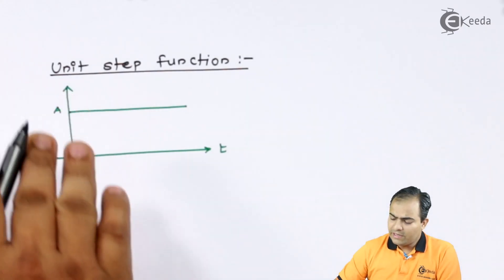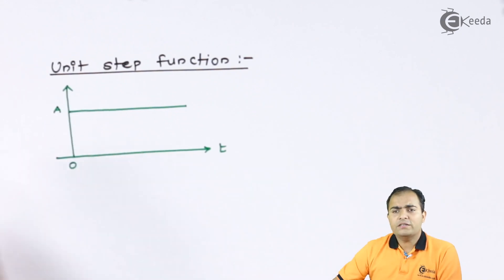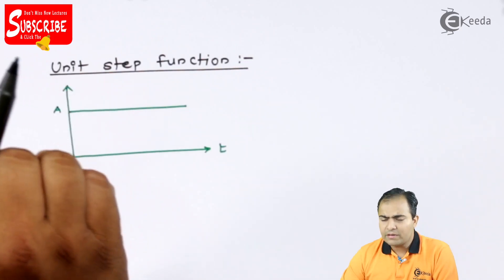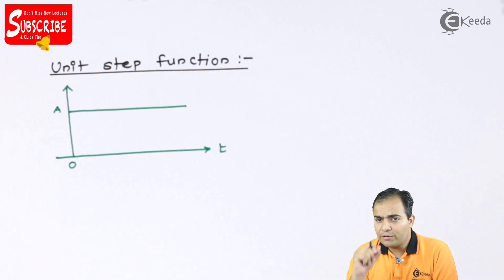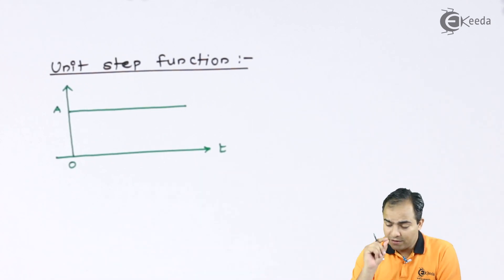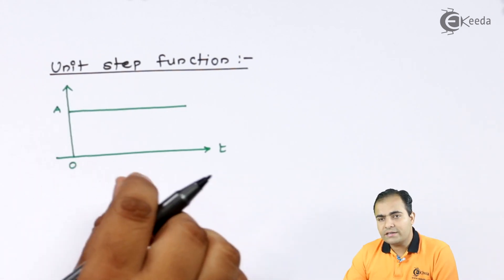Look at this figure. In this figure, the amplitude of this unit step function is constant, and right now I have represented that amplitude by A. If the amplitude of that step function is 1, then you can say that this graph is a unit step function.